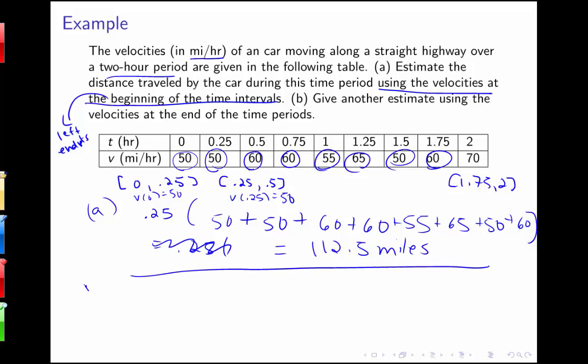So another estimate here could be using our right endpoints, or using the velocities at the end of the time periods. So I still have these intervals 0 to 0.25, 0.25 to 0.5, 0.5 to 0.75, etc. But now I'm going to use the velocity at the ends of the interval. So I'm going to be using v of 0.25, which is 50, v of 0.5, which is 60, v of 0.75, which is 60.